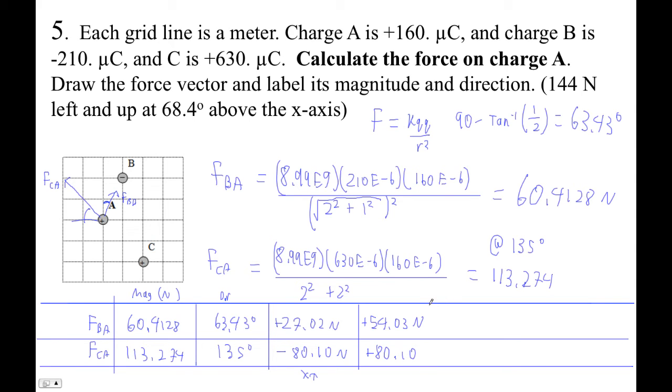Alright, so now we're almost set, right? Okay, so let's see, I guess I got to add this to this. I wish I hadn't written something there. Okay, I'm going to add this to this and this to this. Okay, so 27.02 plus negative 80.10 is negative 53.08. Alright, so I'm adding this to this, get this, right? Now I'm going to add these guys, 54.03 plus 80.10, and they're both positive. This is 134.13.